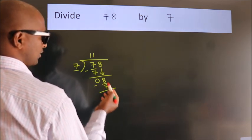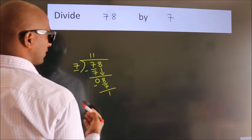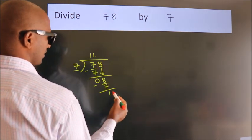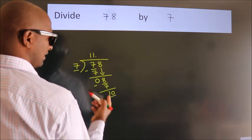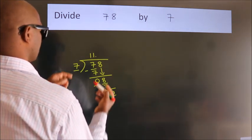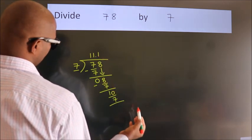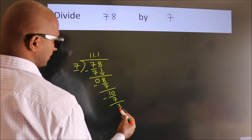After this, no more numbers to bring it down. So what we do is we put dot, take 0. So 10. A number close to 10 in 7 table is 7 once, 7. Now we subtract. We get 3.